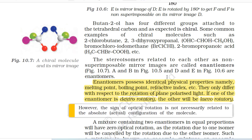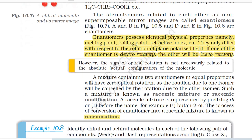If one enantiomer is dextrorotatory, the other will be levorotatory; however, the sign of optical rotation is not necessarily related to the absolute configuration. A mixture containing two enantiomers in equal proportions will have zero optical rotation, as the rotations cancel each other. Such a mixture is known as a racemic mixture or racemic modification, represented by prefixing DL or ± before the name (e.g., ±butan-2-ol). The process of conversion of an enantiomer into a racemic mixture is known as racemization.